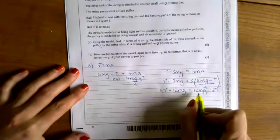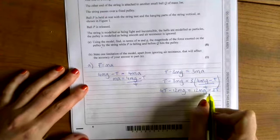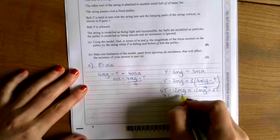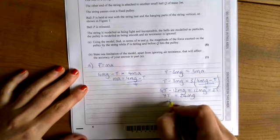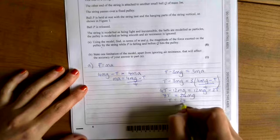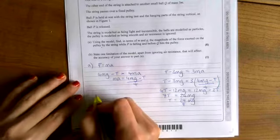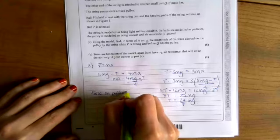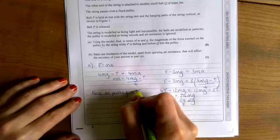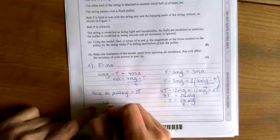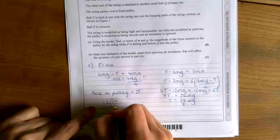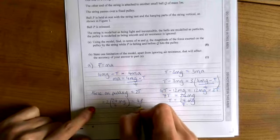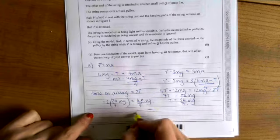So now I'm just going to rearrange this to make T the subject. So take all the T's to one side. I've got 7T equals 24MG. So T equals 24 over 7MG. Now the force on the pulley is 2T, so it's 2 lots of that. So it's 48 over 7MG. And that's our final answer.